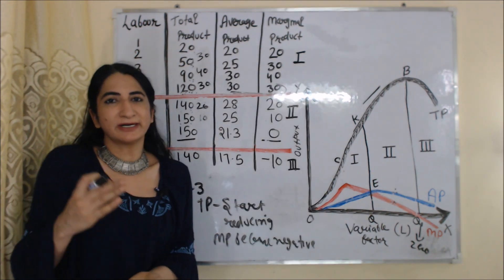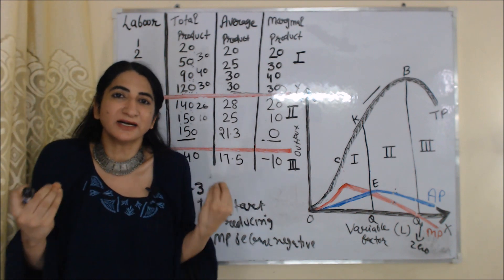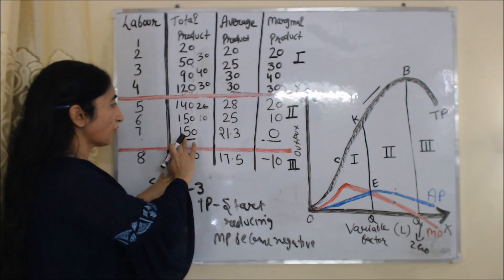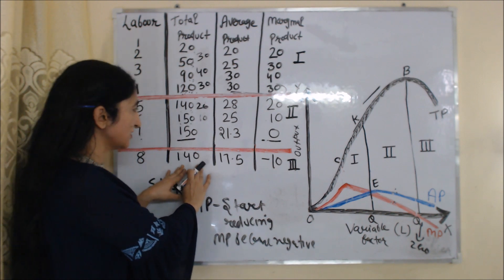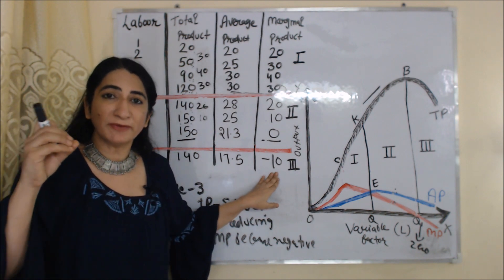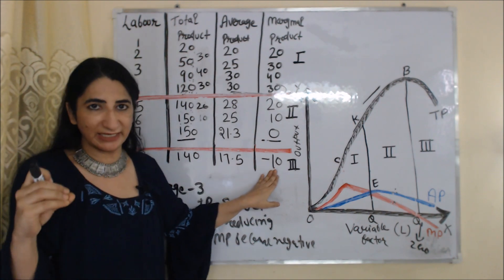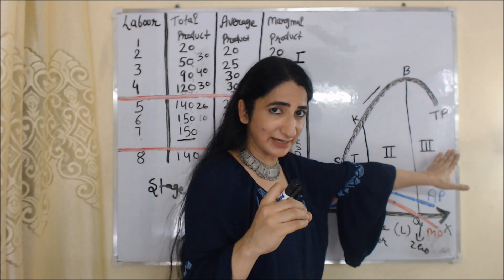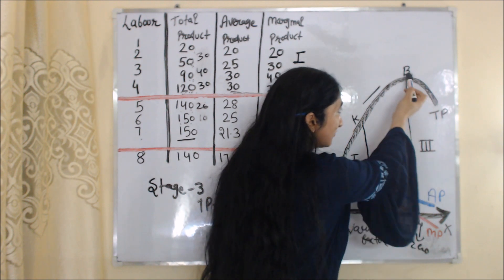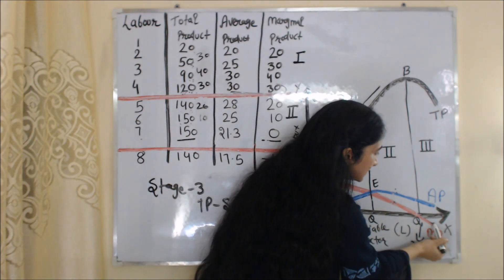Now for the third stage: TP starts reducing. The third stage begins from the 8th labor onward. TP reduces from 150 to 140 — that is 140 minus 150 = minus 10. This minus 10 is our marginal product, which has become negative. In the diagram, the third stage starts from point B, after which TP continuously decreases. Below the diagram, you can see marginal product is negative throughout the third stage.